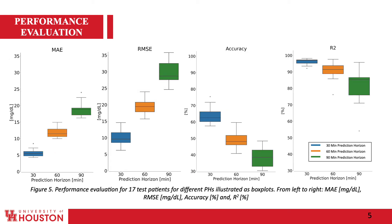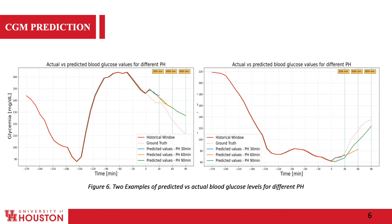The box plot in Figure 5 shows the patient-wise performance evaluation using the same metrics across the test population. The edges of the box plots are the 25th and 75th percentiles, and the median is shown in the middle of the box. According to Figure 4 and Figure 5, we see that by increasing the prediction horizon, the variance of the results and the error increases.